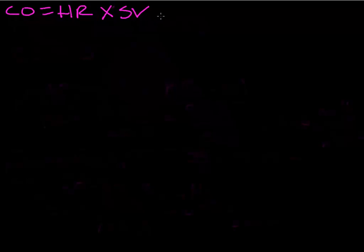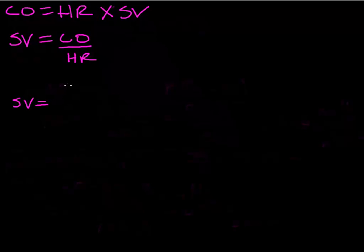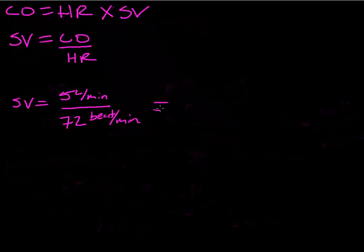At first, Juliet's heart rate was 72 beats per minute and her cardiac output was 5 liters per minute. We need to find stroke volume, so we rearrange: stroke volume equals cardiac output divided by heart rate. Before she saw Romeo, her cardiac output was 5 liters per minute and her heart rate was 72 beats per minute, giving us 0.069. Notice the minutes cancel out and we end up with liters per beat, which is the right unit — stroke volume is the volume ejected by the ventricles every time they beat.